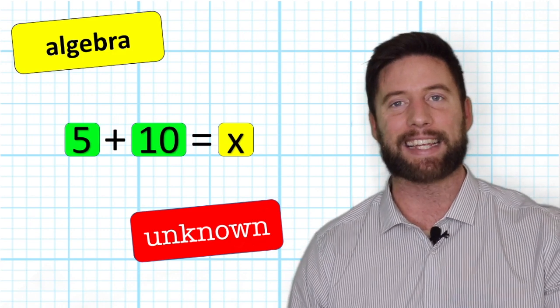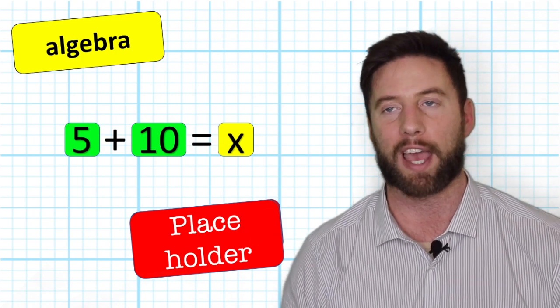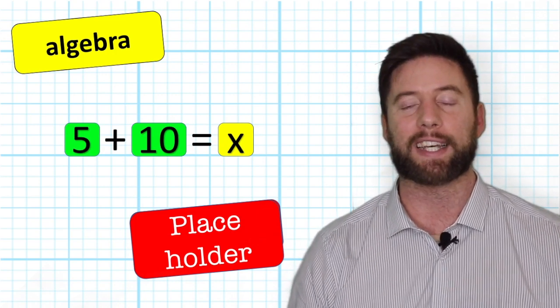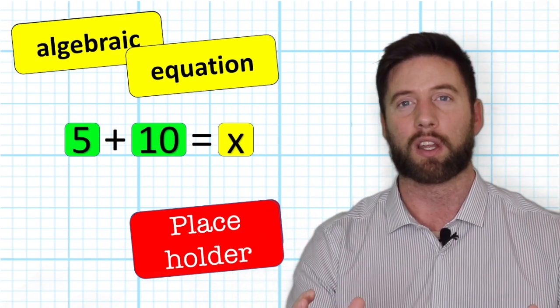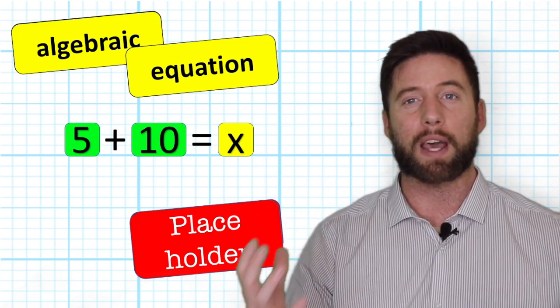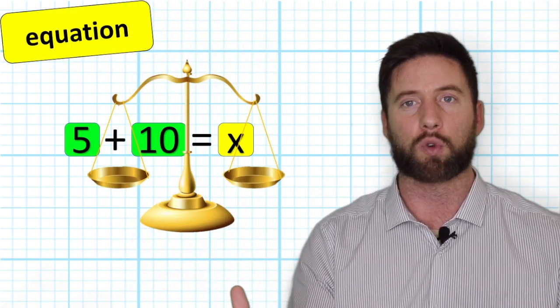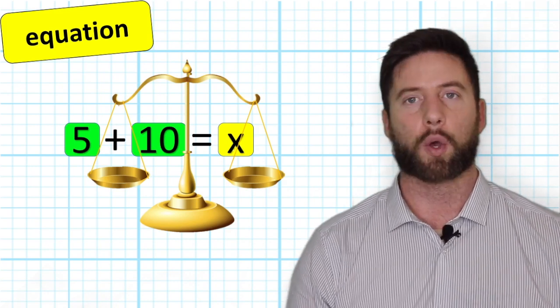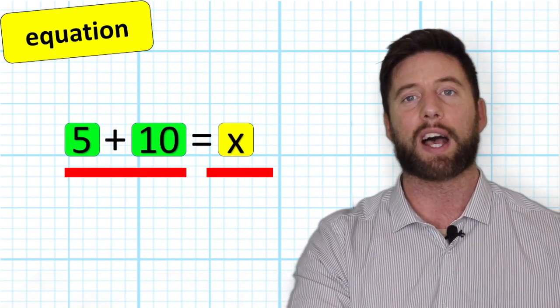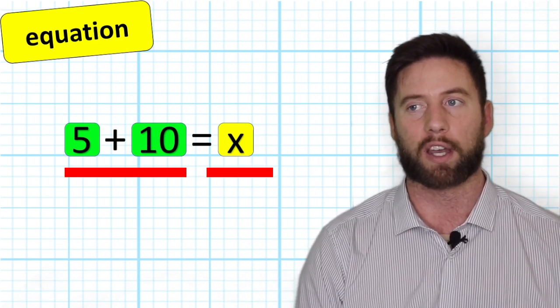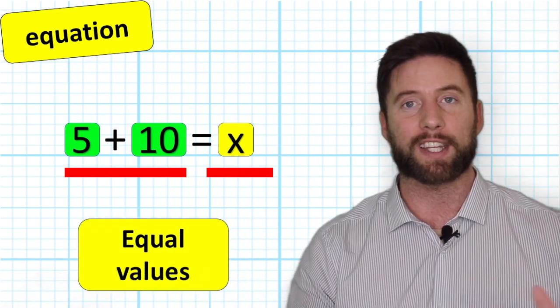The X in this case is a placeholder and stands for the number we haven't got the answer for yet. So what we have created is a very basic algebraic equation. An equation is just a mathematical term meaning both things are equal. It's saying that everything on this side of the equal sign has the same value as everything on the other side.